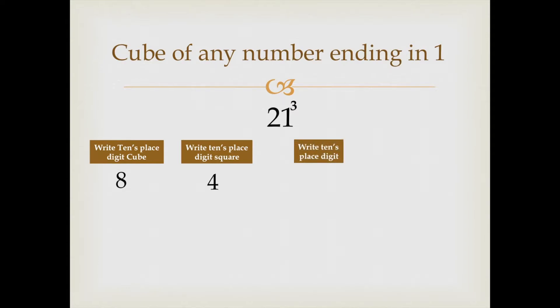In the third step, we will write down 10th place digit. So, we will write 2. Then, the last and the fourth step is, we will write down the 1st place digit number, which is 1. Write 1.